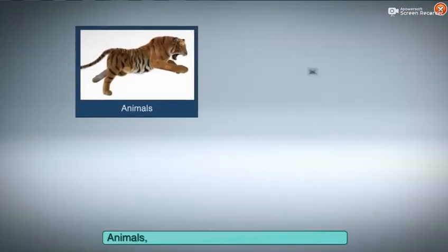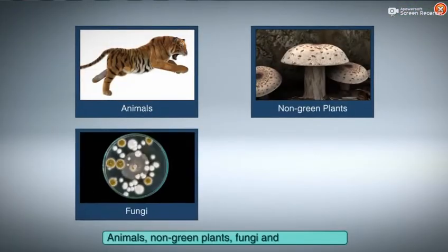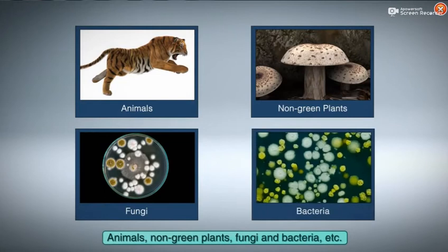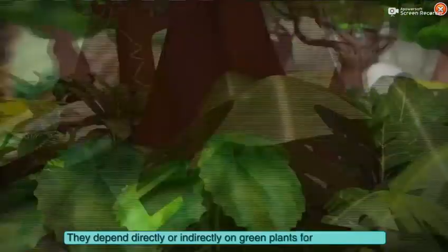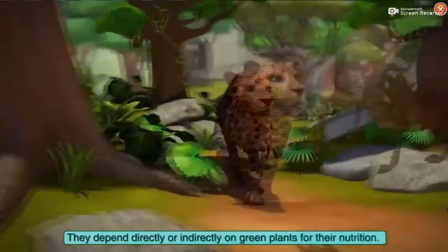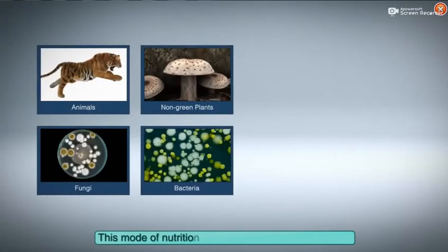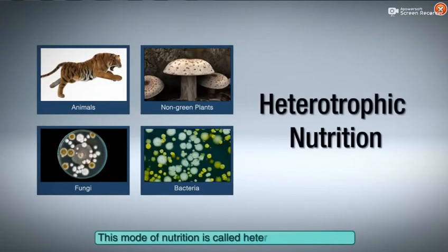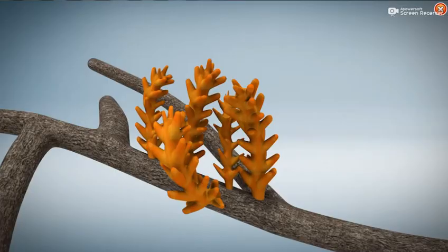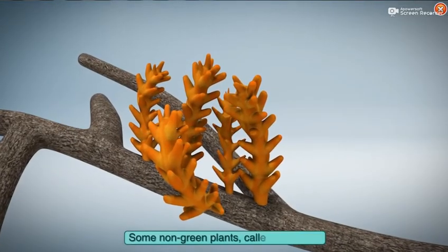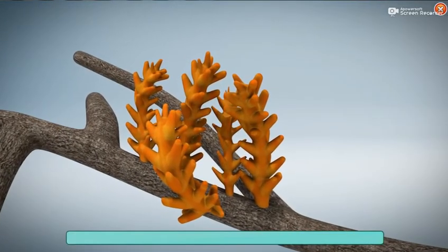Animals, non-green plants, fungi, and bacteria cannot prepare their own food. They depend directly or indirectly on green plants for their nutrition. This mode of nutrition is called heterotrophic nutrition, and animals and non-green plants are known as heterotrophs.